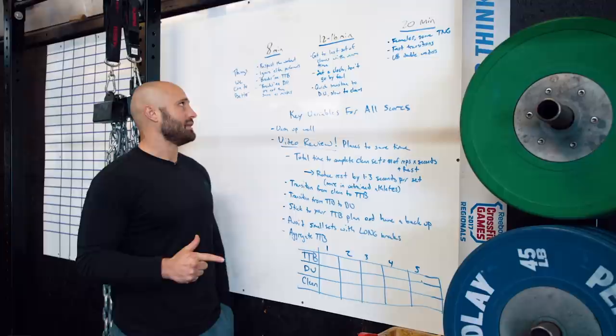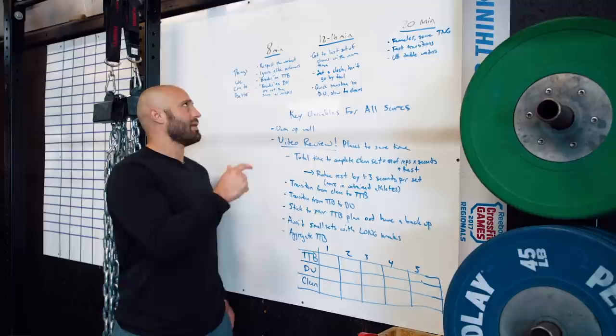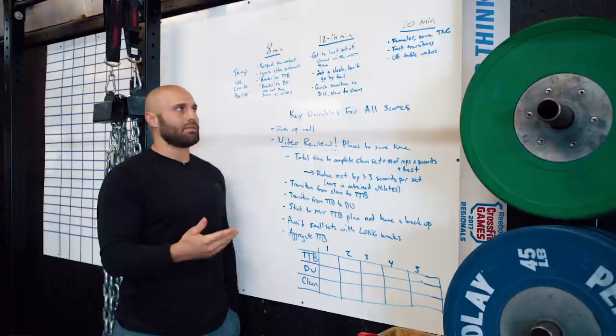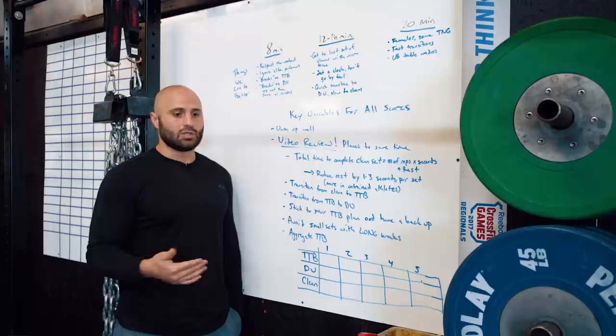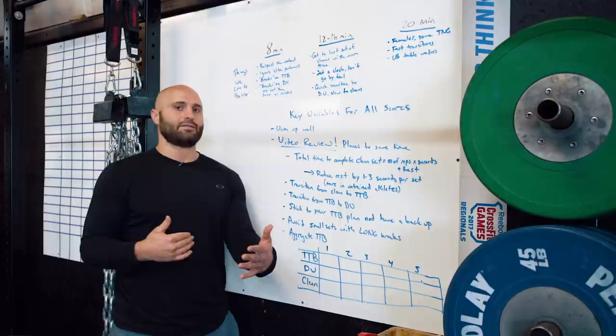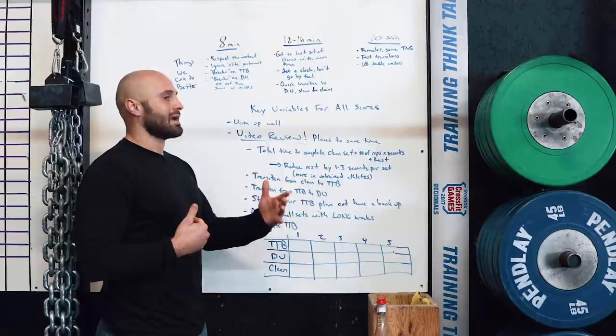First things first: go into the workout, respect how difficult it is, and try to ignore what you've seen from elite performers. People had planned breaks in their toes-to-bar, but what I've seen with people getting stuck in those first two rounds is that their breaks on toes-to-bar are far too long. If you're planning to do doubles or triples and your breaks are still 10 or 15 seconds long, that's not going to get you through in time to beat the time cap.